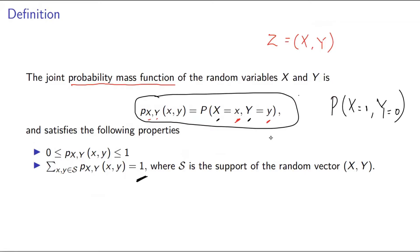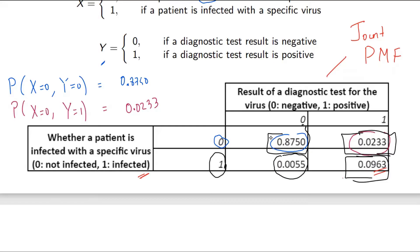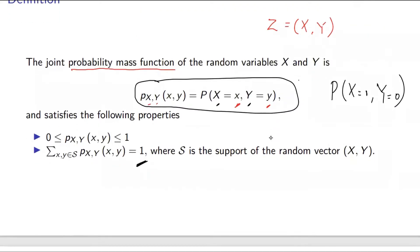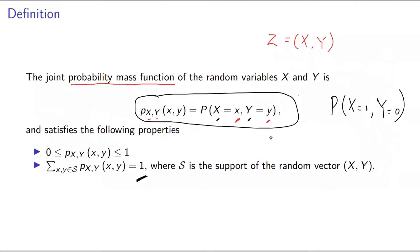In this example, if you sum the values 0.8750 + 0.0233 + 0.0055 + 0.0963, they should sum to 1.0. That's what the second condition is saying: if we sum the joint probabilities over all values of the support, we should get a value of 1.